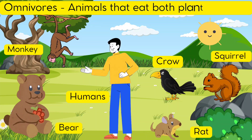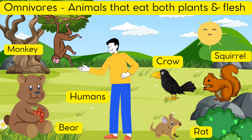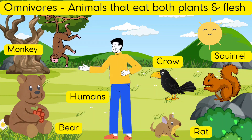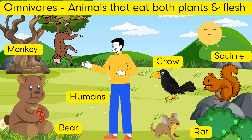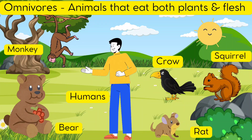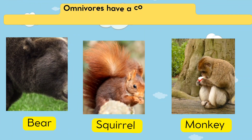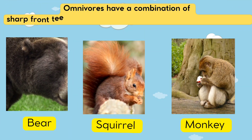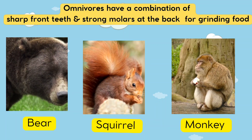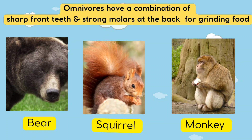Omnivores are animals that eat both plants and flesh of other animals. Examples of omnivores are humans, monkey, bear, rat, squirrel and crow. Omnivores have a combination of sharp front teeth and strong molars at the back for grinding the food.